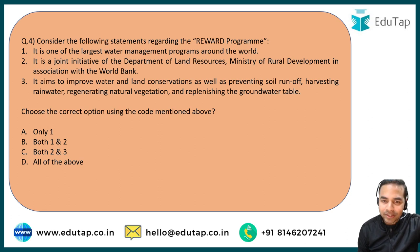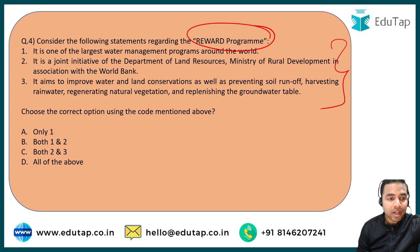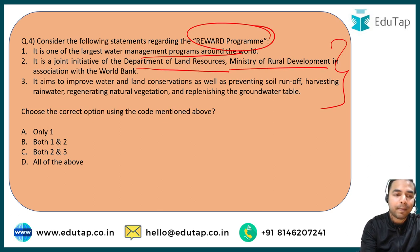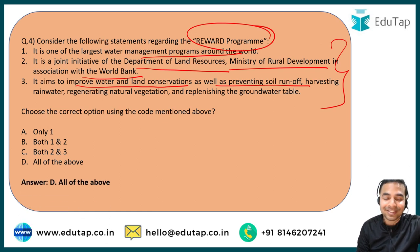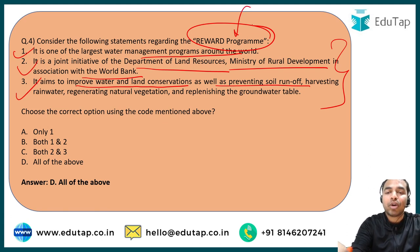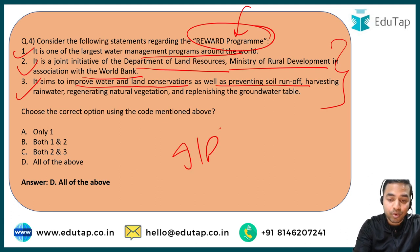The fourth question is about the REWARD program — an important watershed management program. Statement 1: it is one of the largest water management programs in the world. Statement 2: it is a joint initiative of the Department of Land Resources, Ministry of Rural Development, along with the World Bank. Statement 3: it aims to improve water and land conservation, prevent soil runoff, harvest rainwater, regenerate natural vegetation, and replenish the groundwater table.